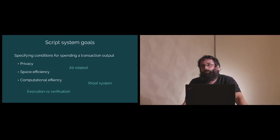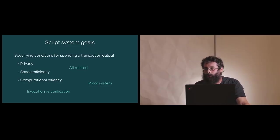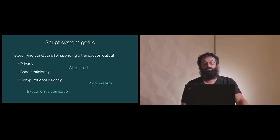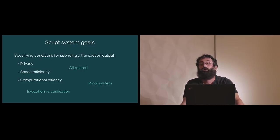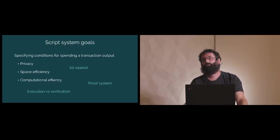First of all, we should think about the Bitcoin scripting language as a way for specifying conditions for spending a transaction output. Bitcoin uses a UTXO model which has significant advantages in terms of privacy. Really everything that our scripting language does is specifying under what conditions you can spend an output. But we want to do that under various constraints — one of them is privacy. You don't want to reveal to the world who you are or what you were doing.